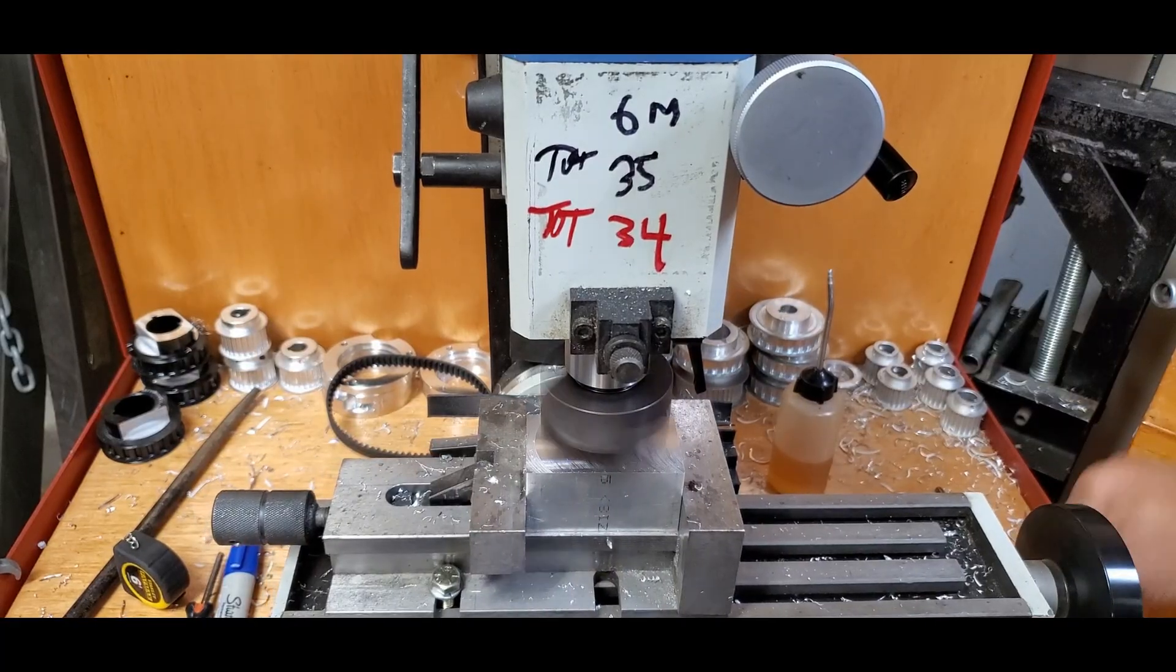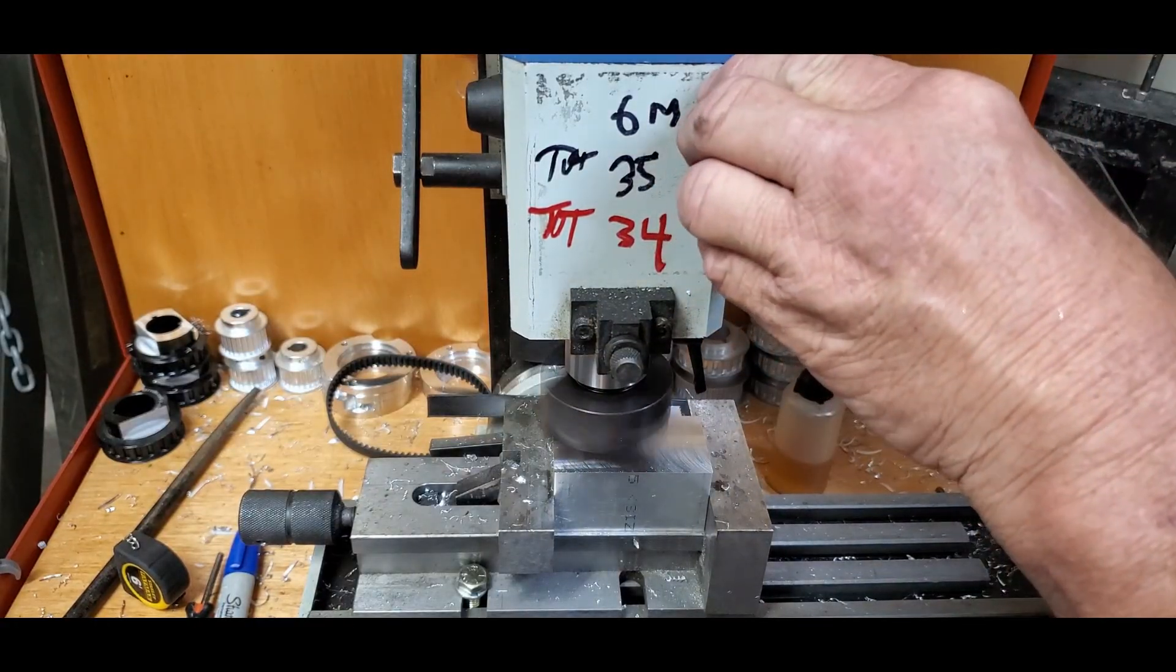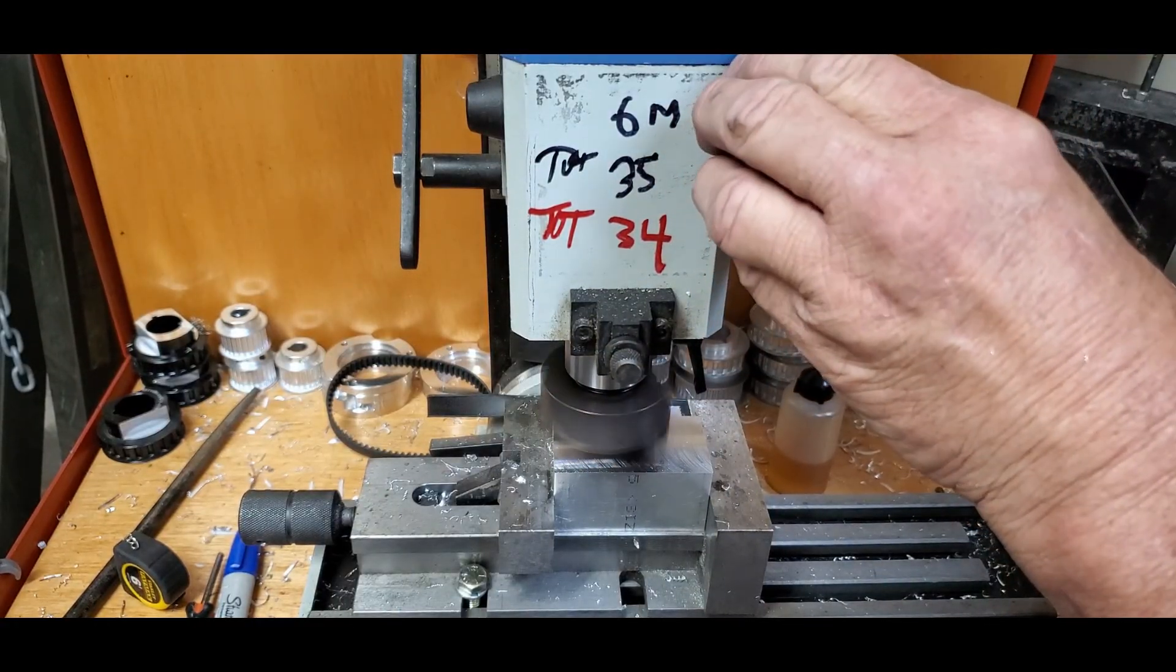Let's try 20 thousandths and see what happens. 2800 RPM, 5, 10, 15, 20.